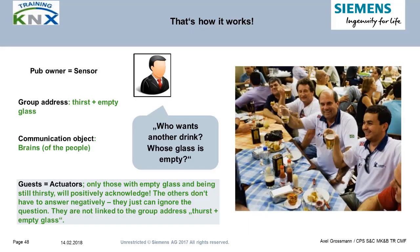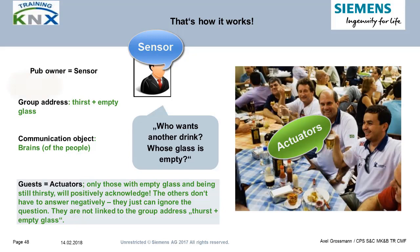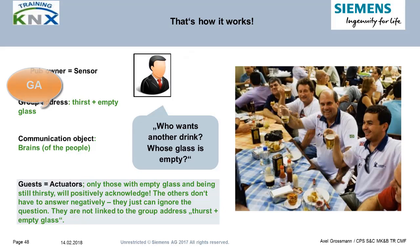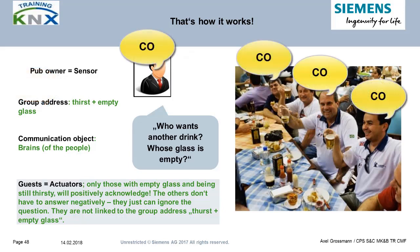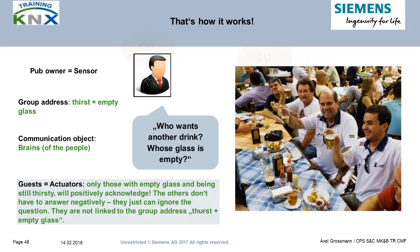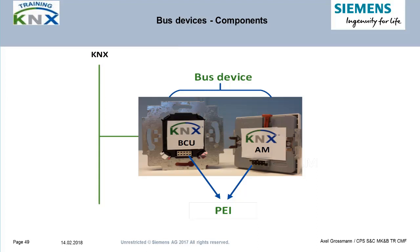Here is the solution to the little quiz. Have you identified our keywords in this real-world situation? Sensor: pub owner. Actuators: guests. Group address: empty glass plus thirst. Communication objects: the brains of the involved people — they send, receive, and process information.